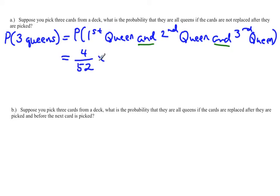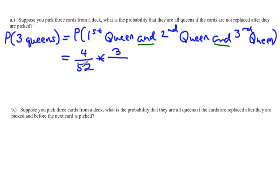The multiplication principle says we multiply that by the probability that the second card is a queen, given the first card was also a queen. So instead of four queens left in the deck, there are now only three queens left because we didn't replace that card. And instead of 52 cards, there are now only 51 cards.